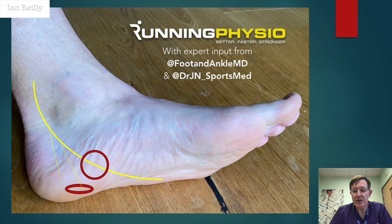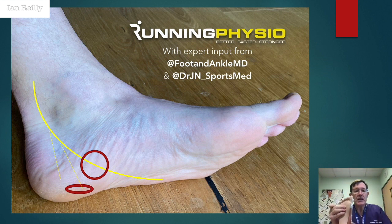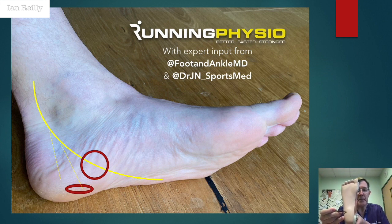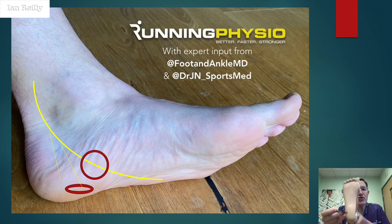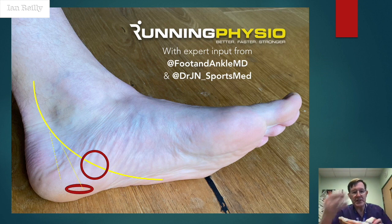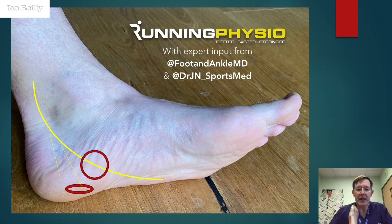The first branch off the lateral plantar nerve is Baxter's nerve — the inferior calcaneal nerve. Tom, on your picture you'd label it higher up, but typically where you'll see Baxter's nerve pain in terms of palpation will be plantar lateral. You'll nearly always see it with a heel spur. Baxter's nerve can be compressed at any point as it goes through the musculature, but you'll often look for neuralgic plantar lateral pain.